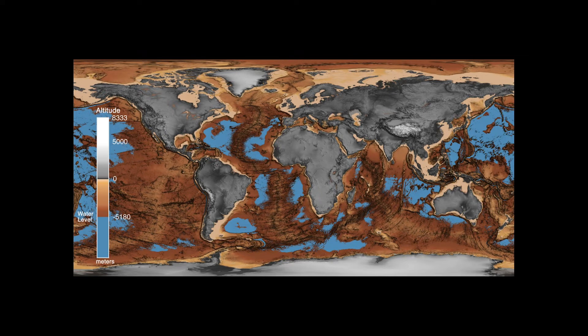The oldest seafloor we can find today is about 180 million years old. Prior to that, we have to look at epeiric seaways — inland seaways — that accumulate carbonate rock predominantly for our isotope and climate reconstruction purposes. You also see epeiric seaways like that which covered Saskatchewan around 100 million years ago and deposited large amounts of potash. We'll get into that a little bit later in the course as well.